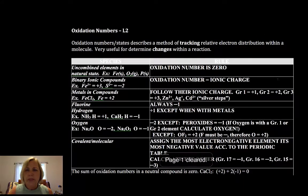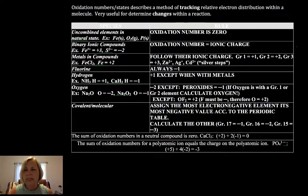So when we do this, there are some rules that we want to make sure you understand. If we have an uncombined element in its natural state, its oxidation number is 0. That doesn't have anything to do with the state of matter, just how it is found. So iron solid is 0, and iron liquid is 0. If we melt it, it's still 0. If it's a pure element all by itself, not bonded to anything, it's 0.